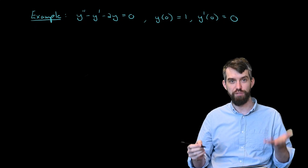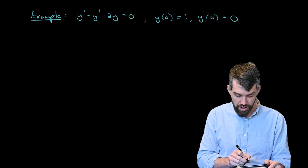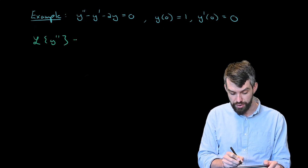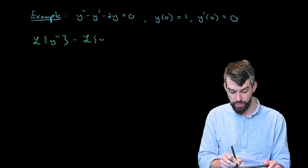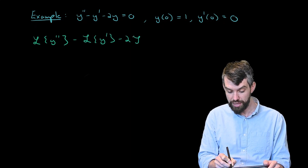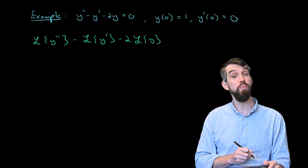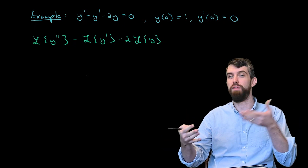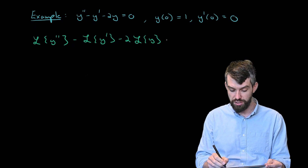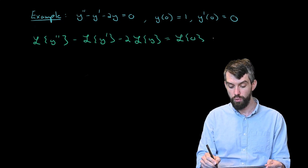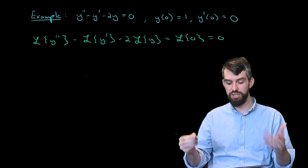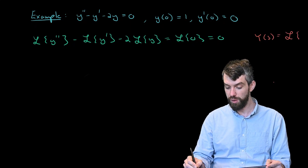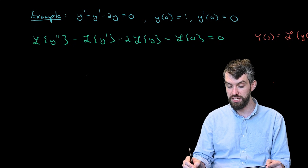The method is first to take the Laplace transform of both sides. I'll take the Laplace transform of y double prime, subtract off the Laplace transform of y prime, and subtract off twice the Laplace transform of y. By linearity, the Laplace transform of a linear combination is the linear combination of the Laplace transforms. The right side gives just 0. I'll define the notation that capital Y(s) stands for the Laplace transform of y(t).